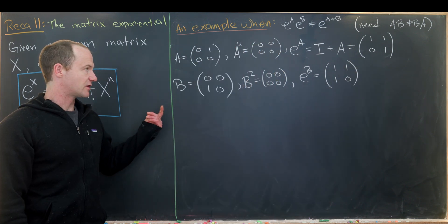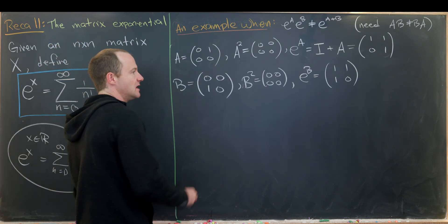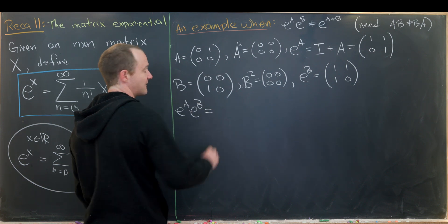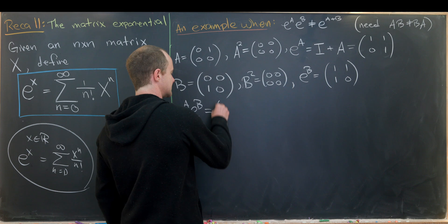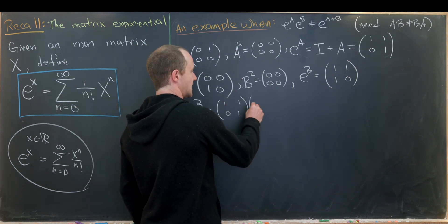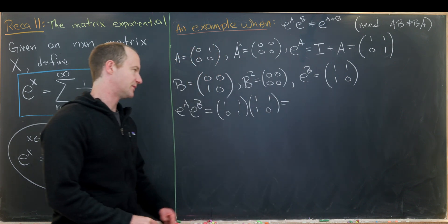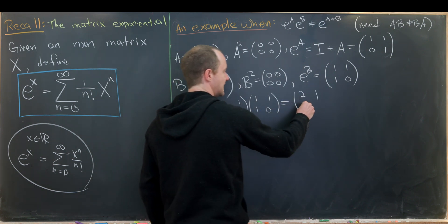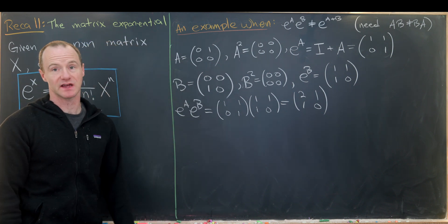Now let's calculate e to the A times e to the B as well as e to the A plus B. We'll do e to the A times e to the B first since it's easiest. That gives us [1,1; 0,1] times [1,0; 1,1]. Doing matrix multiplication, we get 2 for the first entry, then 1 for the next two entries, and 0 for the last entry, giving the matrix [2,1; 1,0].